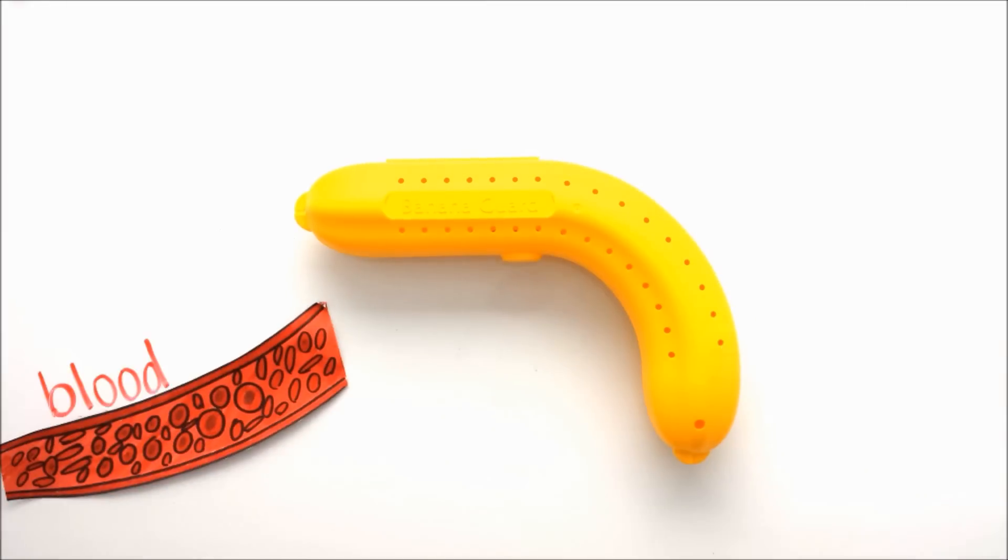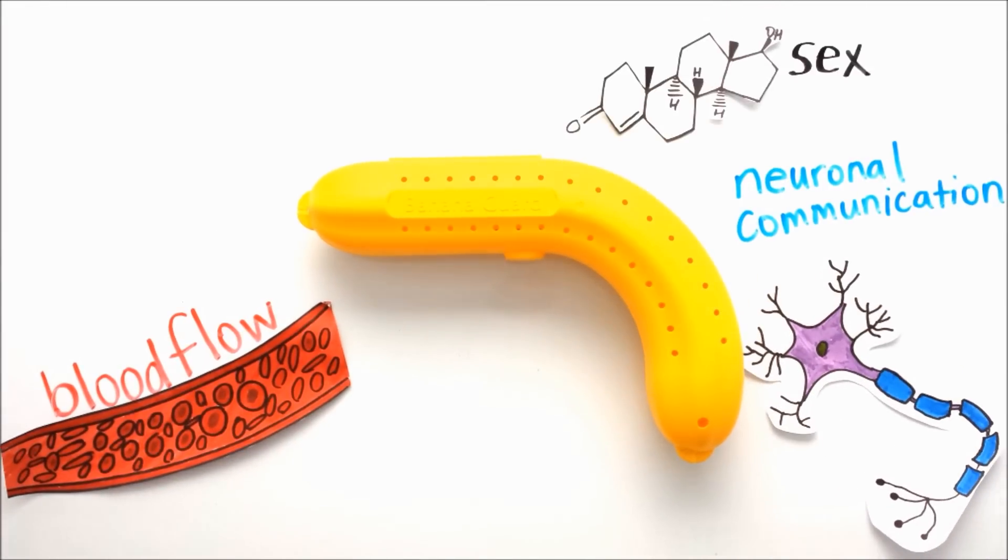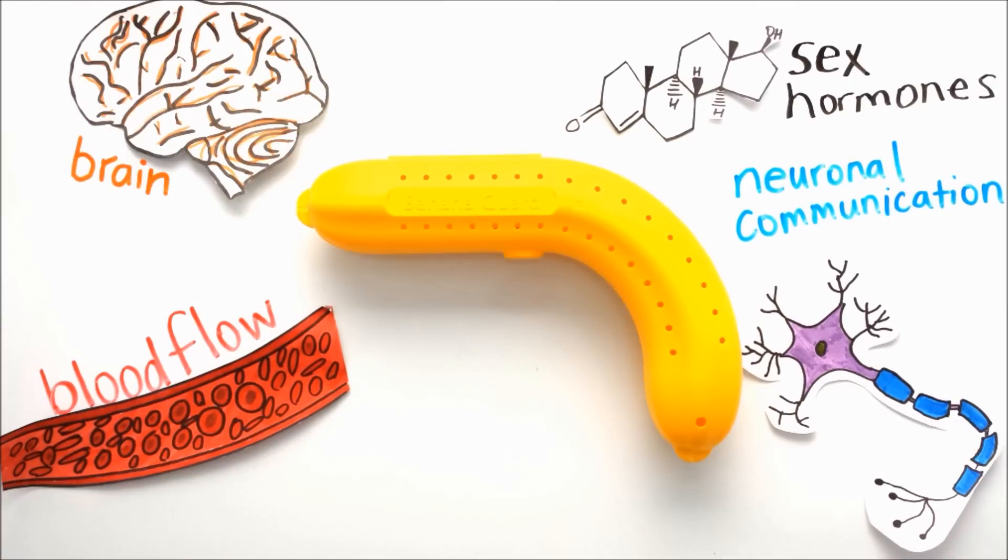To simplify matters, there are four parts to an erection: blood flow, communication between nerve cells, sex hormones, and your brain, all of which work together to produce an erection.